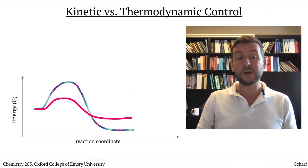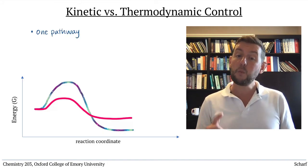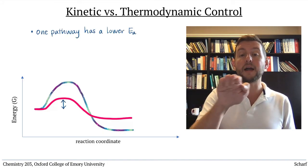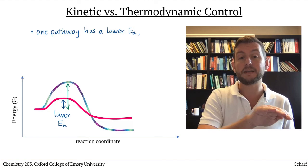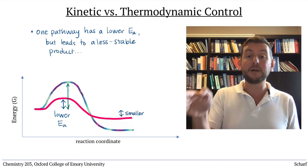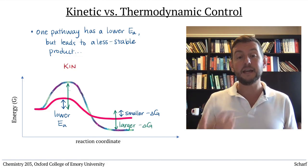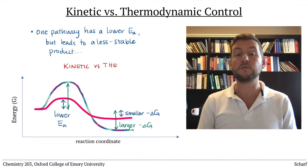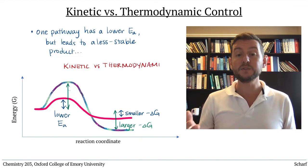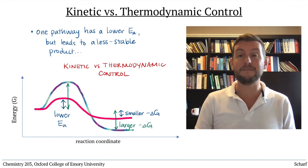This sort of situation isn't terribly uncommon. If one pathway has a lower activation energy barrier, but leads to a less stable product than a pathway with a higher activation energy barrier, then kinetic versus thermodynamic control can apply. We'll see several more examples of this in future videos.